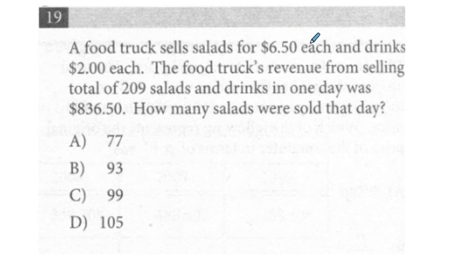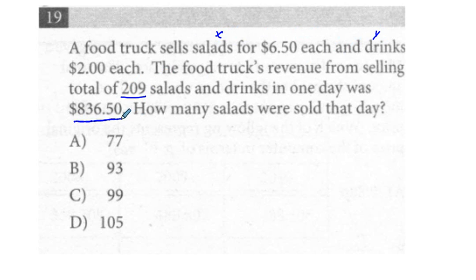Okay, we have two items: salads — we'll call that x — and drinks — we'll call that y. These add up to a total number of both 209, and a total dollar amount of 836.50.